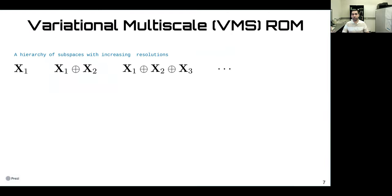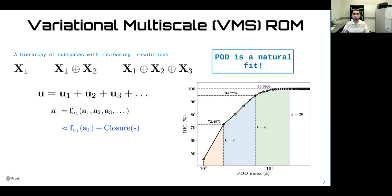We extend the variational multi-scale framework to address the closure problem. This method starts with defining hierarchy of subspaces with increasing resolution. Like we have X1, X1 plus X2, X1 plus X2 plus X3, and so on. Then we divide the solution or the flow field into a component u1 that lives in X1, component u2 that lives in X2, and so on. Then we perform the Galerkin projection to get an equation that describes the dynamics of a1, a2, a3. Now we assume that we are interested only in the component u1, so we consider the equation for a1. But again, the dynamics of a1 depends on the remaining scales as well. So we do the truncation and ignore this effect, but then we define the closure models to add some correction. We believe that proper orthogonal decomposition or POD is a natural fit for this VMS methodology, because in POD we get a hierarchy of basis functions that are sorted based on their contribution to the total variance of the data or the total energy in the system.